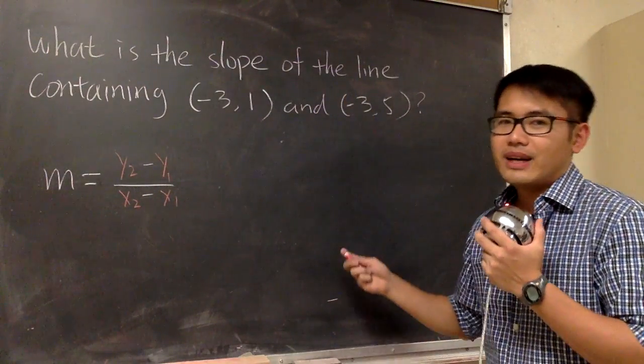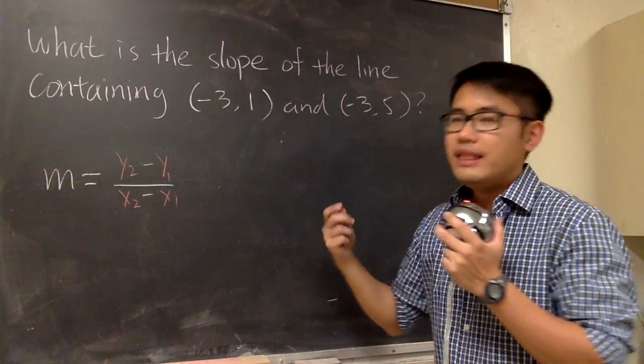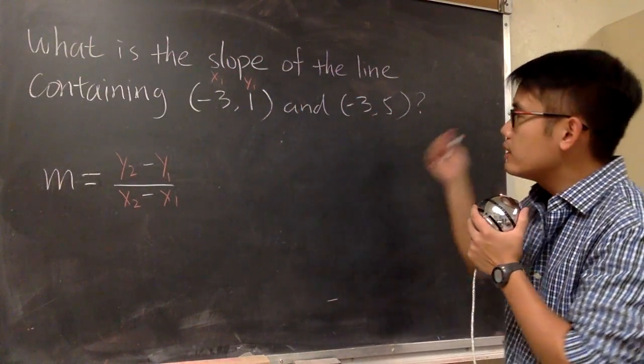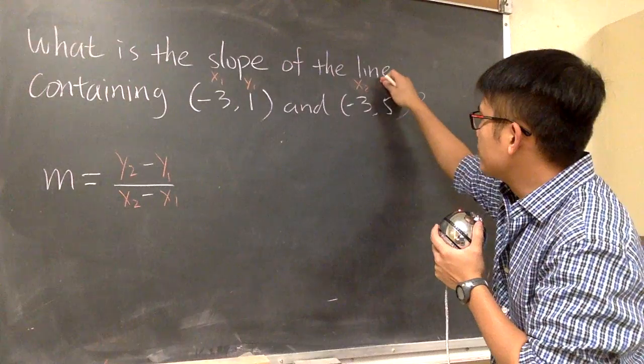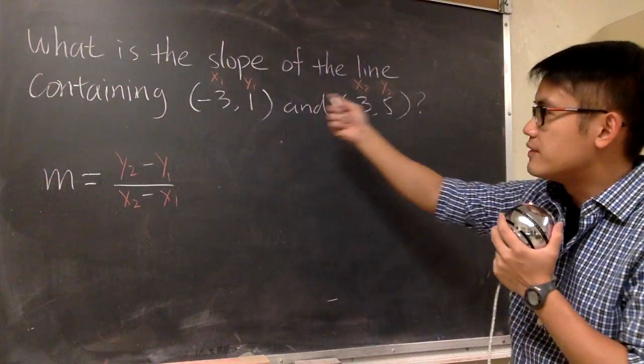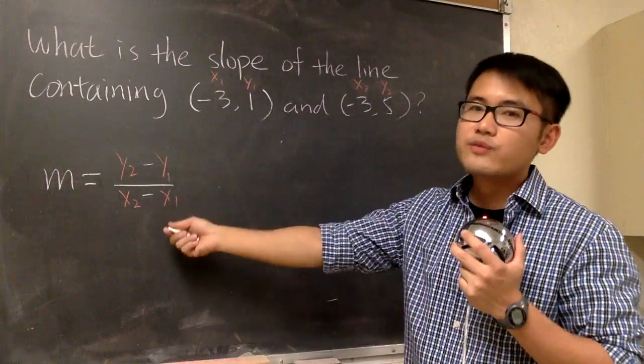Okay, and when we have these two points, let's just label the first point as x1, y1, and for the second point, right here, we label this as x2 and y2. And now we can just plug in this value into this formula accordingly.